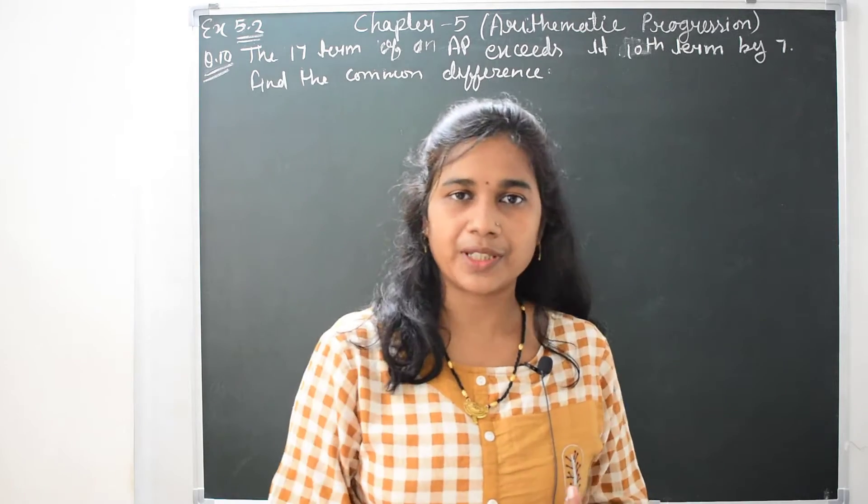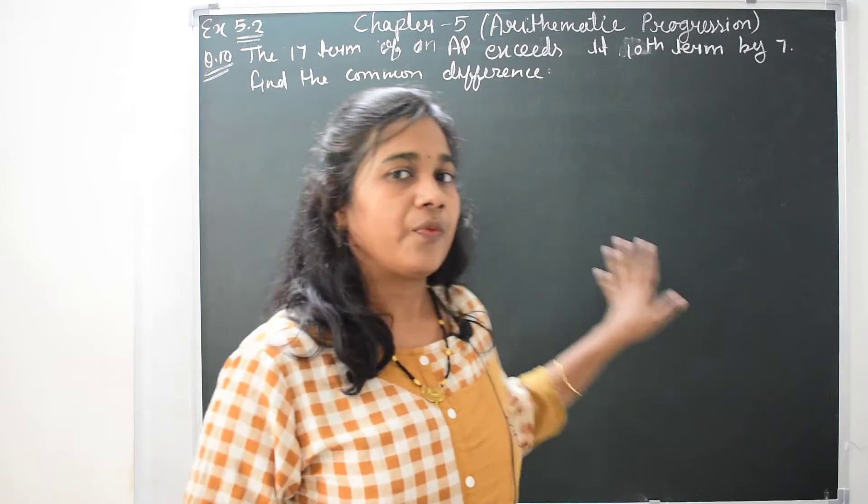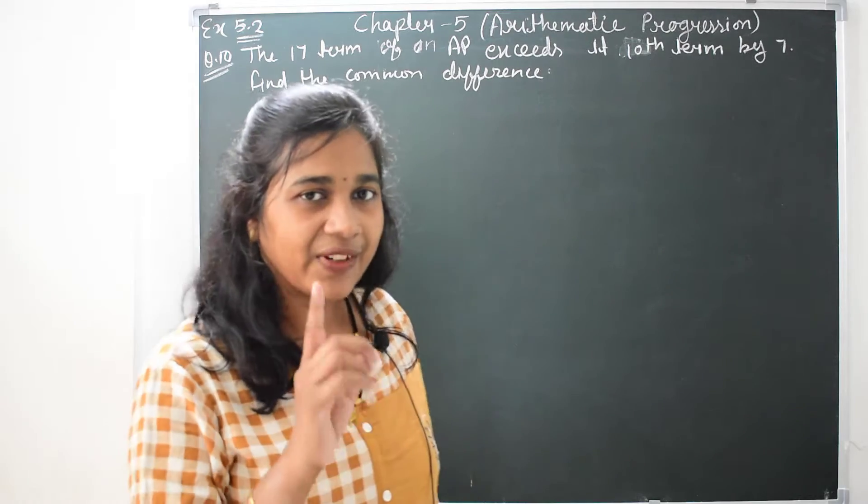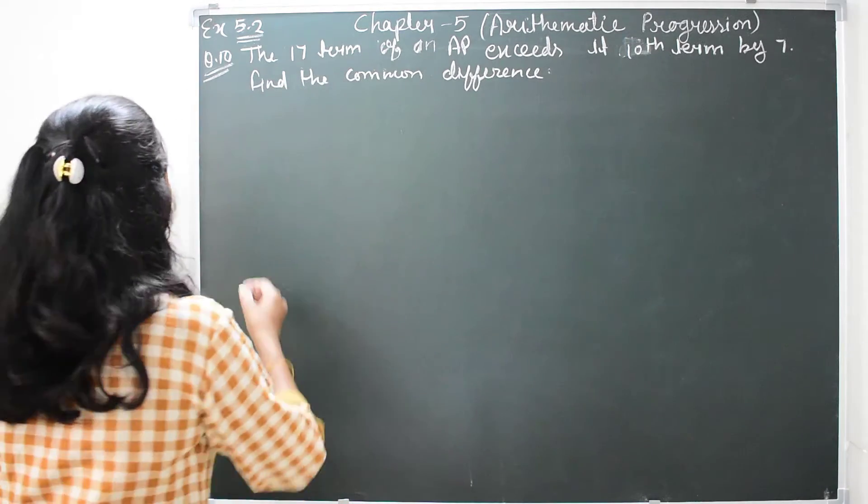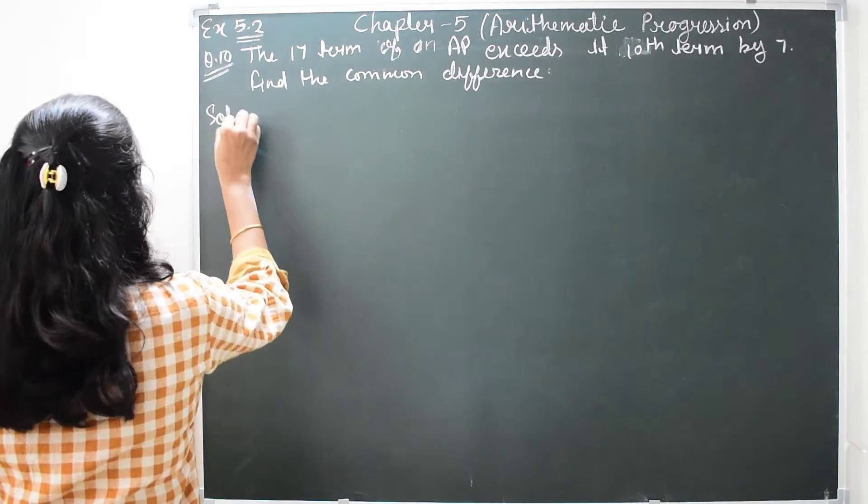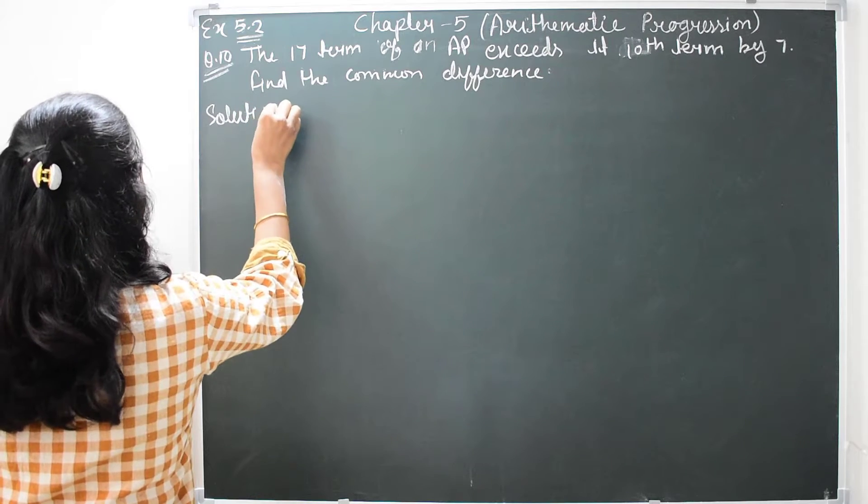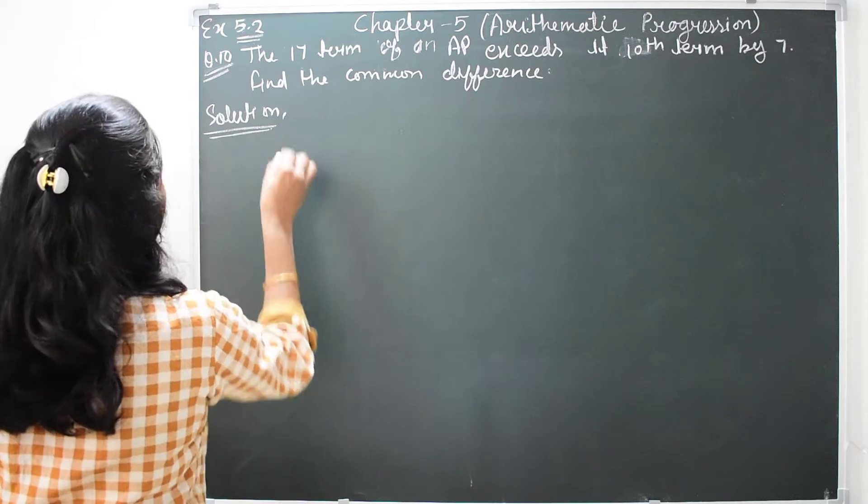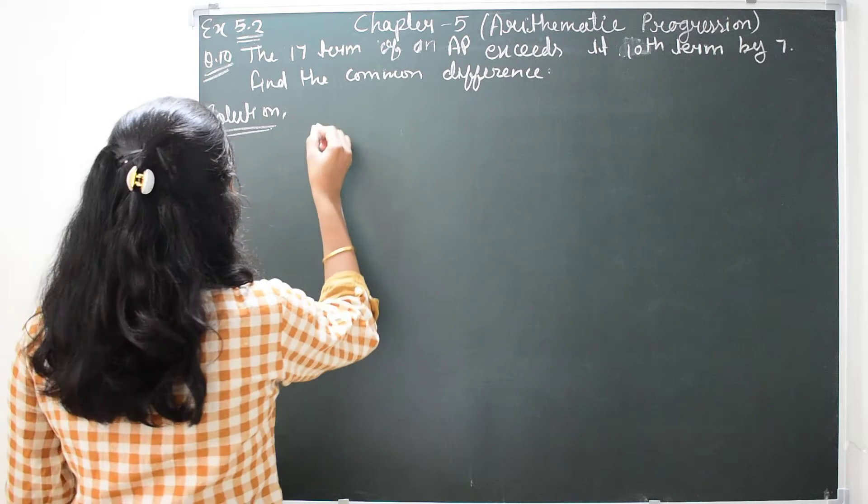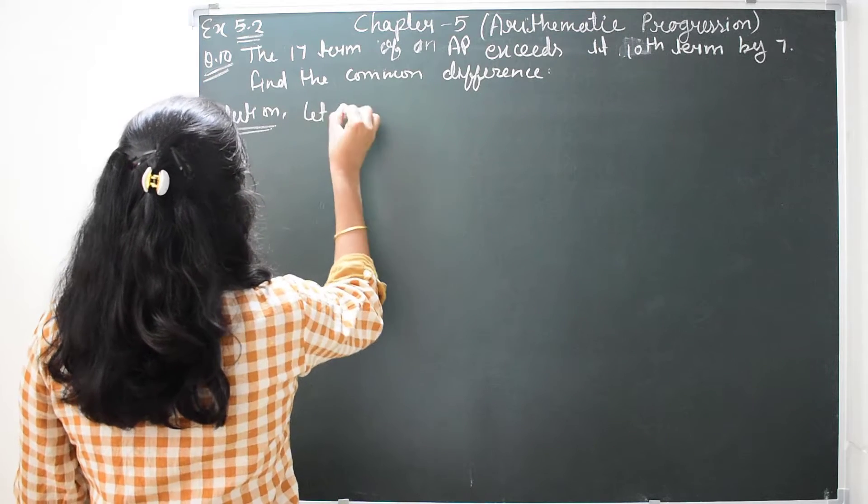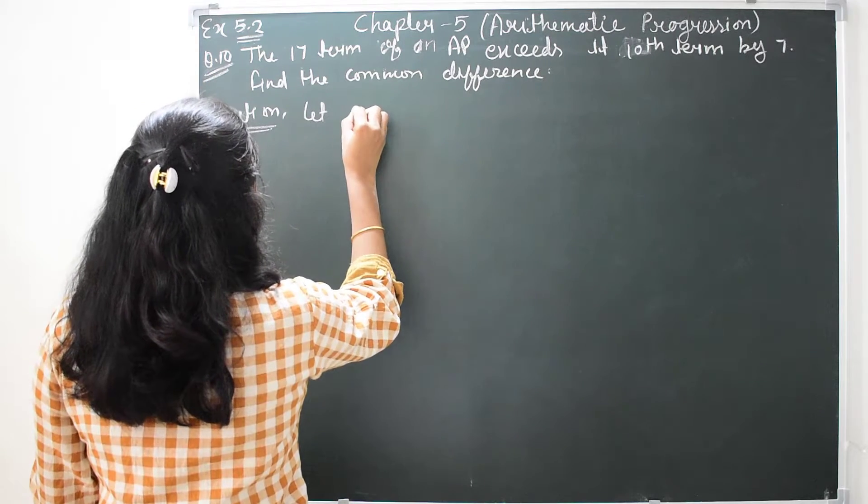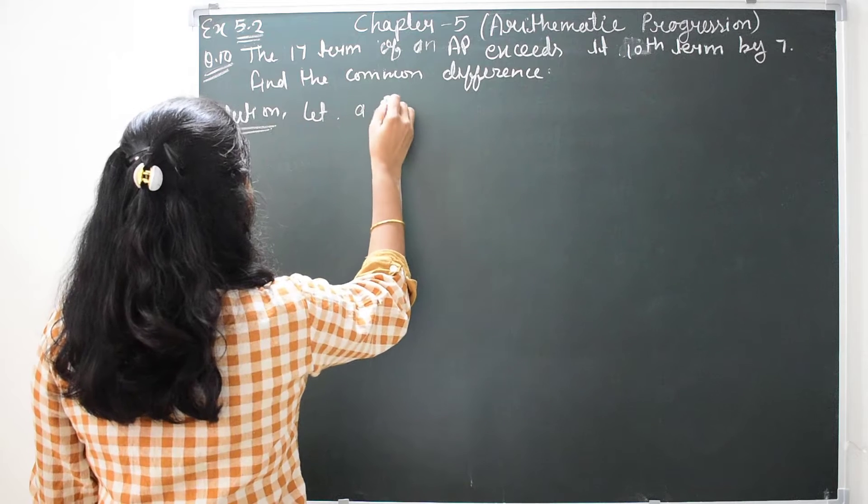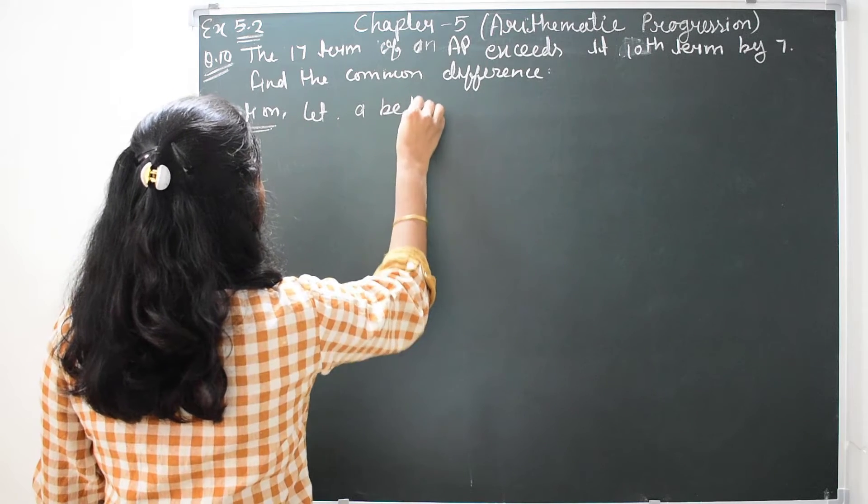The 17th term exceeds the 10th term, so we have to find the common difference. This chapter is simple. Okay, let's find the solution. Let A be the first term.